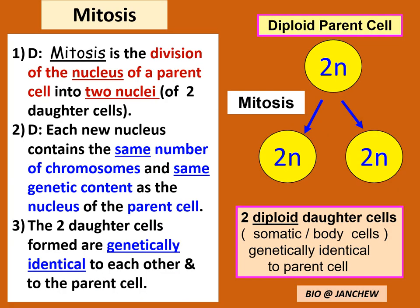Let us review the definition for mitosis. It is good to memorize all these definitions as it will help you to master biology. Mitosis is the division of the nucleus of a parent cell into two nuclei, which are in the two new daughter cells, with the same number of chromosomes and the same genetic content as the nucleus of the parent cell. The aim of mitosis is to form two daughter cells that are exactly and genetically identical to the parent cell.